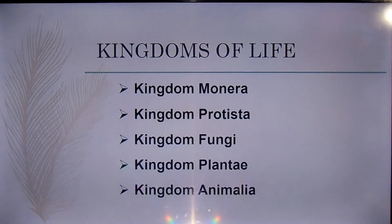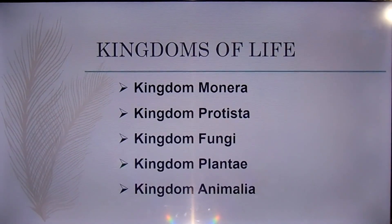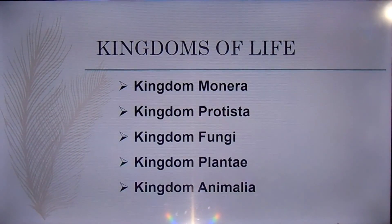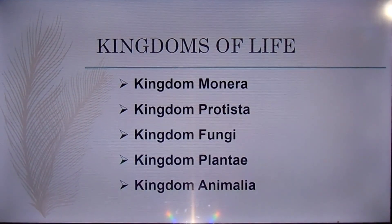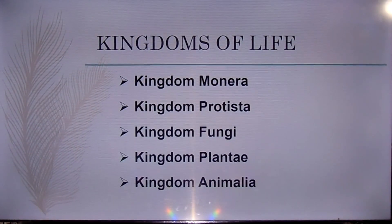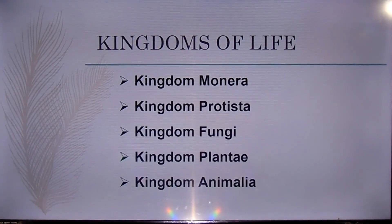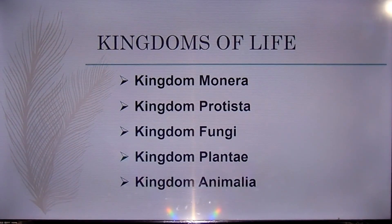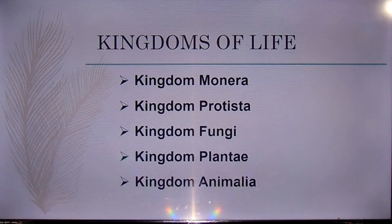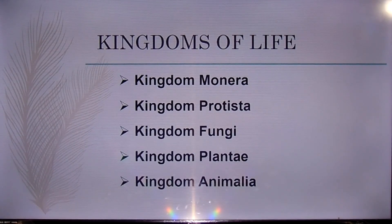A five-kingdom taxonomic classification of the world's biota has been prescribed by Robert Whittaker. These five kingdoms include Kingdom Monera, Kingdom Protista, Kingdom Fungi, Kingdom Plantae, and Kingdom Animalia. This system became a basis for a newer multi-kingdom system, such as the six-kingdom system of Carl Woese and his colleagues in 1977.